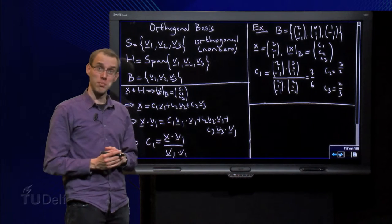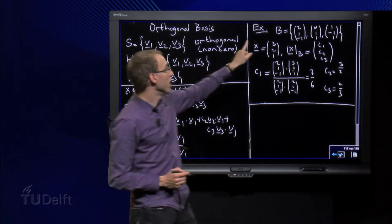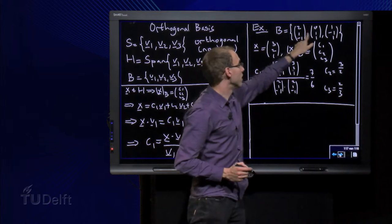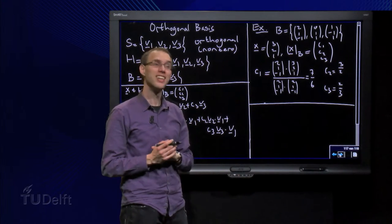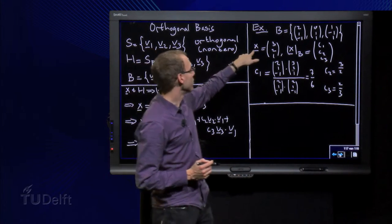So, let us look at an explicit example. Here we have our basis with three orthogonal vectors. Check this. And we have some x.